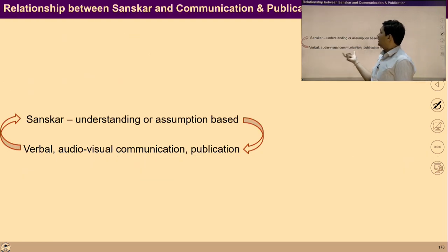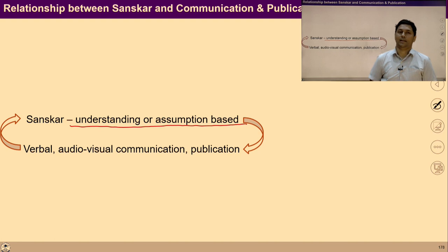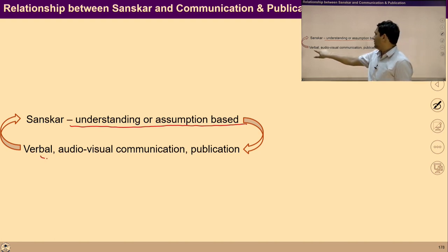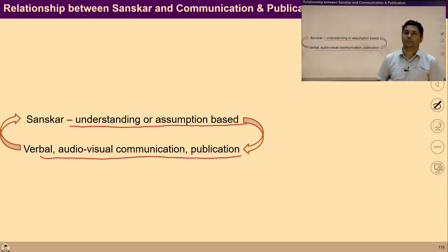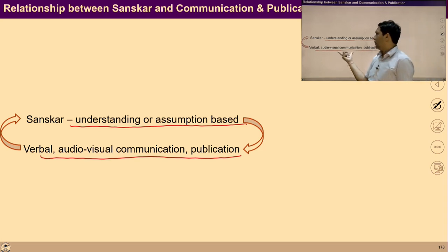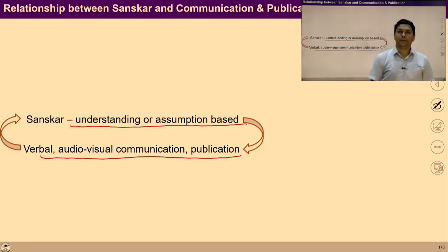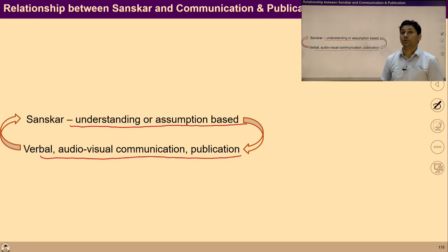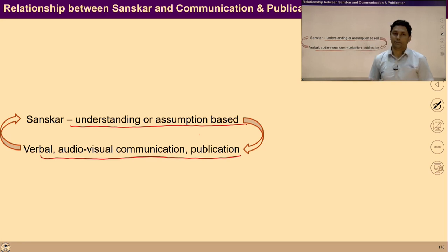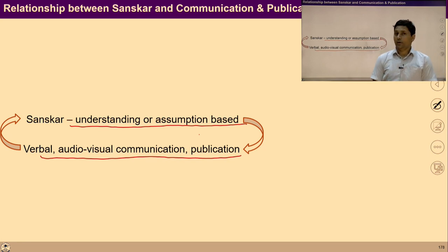What is the relationship between sanskar and communication? Sanskar is basically our understanding or assumption about realities, and for this we use various types of communication — verbal communication, audio-visual communication, and printed media — to convey our acceptance and understanding to others. Sanskar and culture are very closely related to each other. If our sanskar are based on right understanding and right injunctions, then using these media we can convey co-existential principles and harmony to every individual.